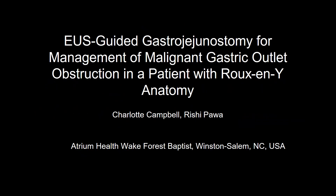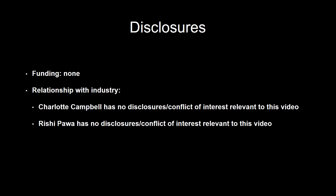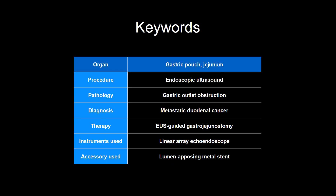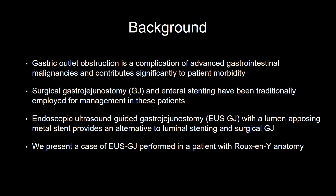EUS-guided gastrojejunostomy for management of malignant gastric outlet obstruction in a patient with Roux-en-Y anatomy. Gastric outlet obstruction is a complication of advanced gastrointestinal malignancies and contributes significantly to patient morbidity. Surgical gastrojejunostomy and enteral stenting have been traditionally employed for management. Endoscopic ultrasound-guided gastrojejunostomy with a lumen-apposing metal stent provides an alternative to luminal stenting and surgical gastrojejunostomy. We present a case of EUS-guided gastrojejunostomy performed in a patient with Roux-en-Y anatomy.